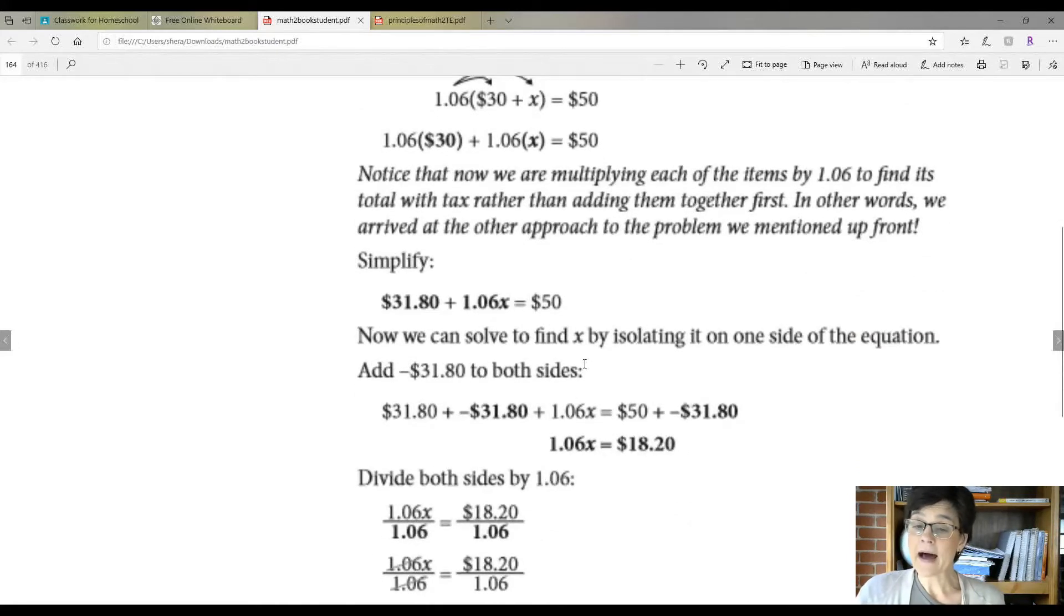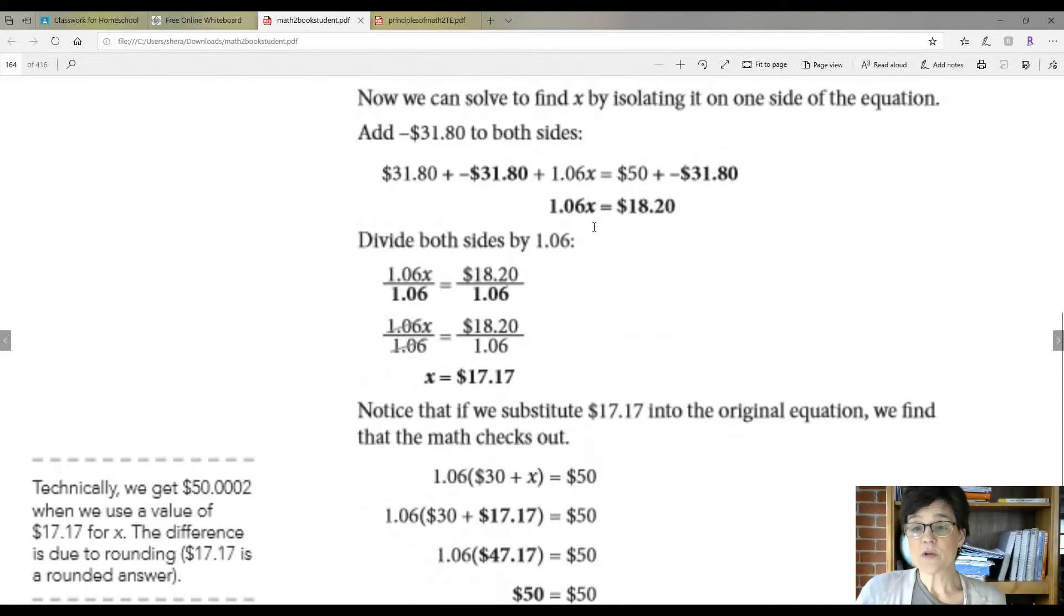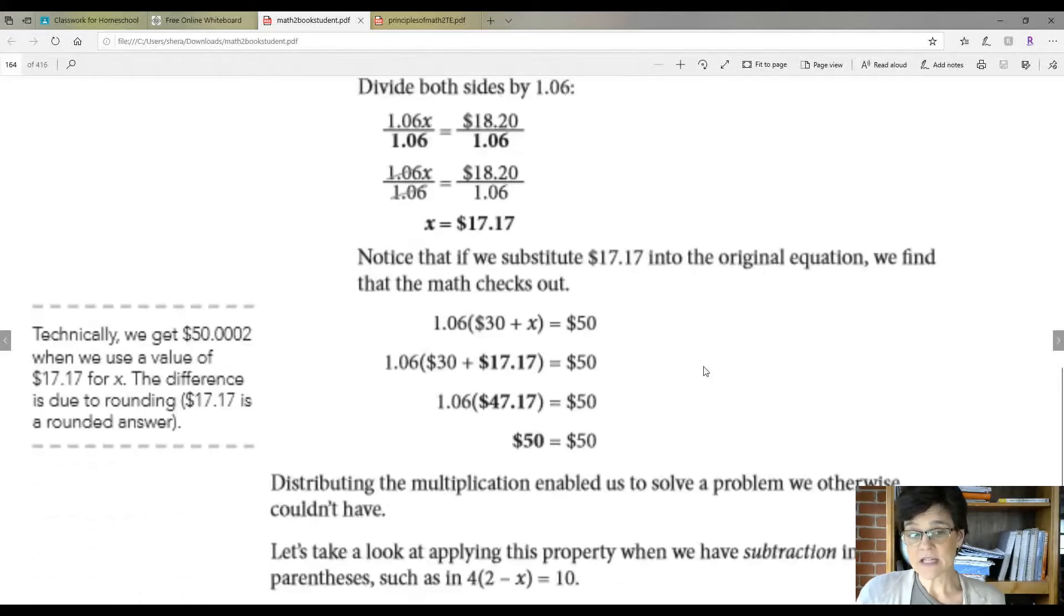Now you can solve to find X by isolating it on one side. So 31.80, we're just going to subtract that from both sides. So then we're left with 1.06X equals 18.20 because you have to subtract that from this side. Then you would divide both sides because you've got to do the opposite of what this is. This is multiplication. The opposite of that is division. So divide both sides by 1.06. These cancel out. You're left with X by itself. Once you do the calculations, you get $17.17.